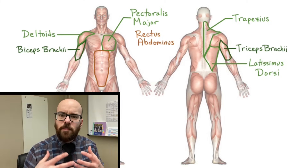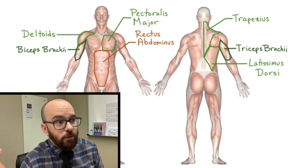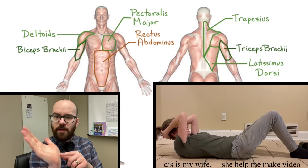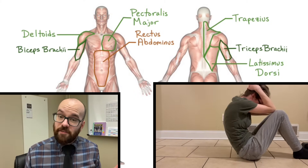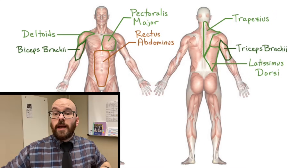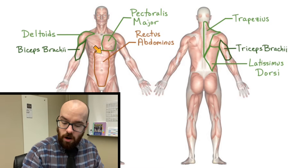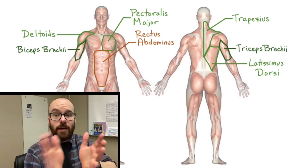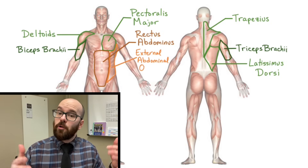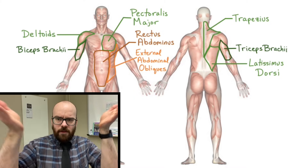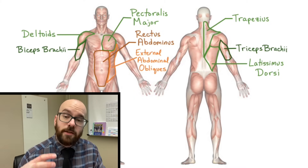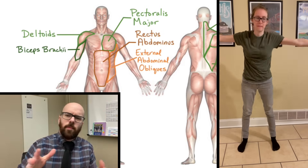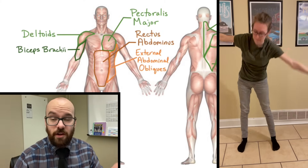Moving down to the abdominal muscles: the rectus abdominis — what you think of as the six-pack — bends the spine, like doing a sit-up. It connects from the anterior pelvis to the costal cartilage of the ribs, pulling those together to flex the spine. Lateral to the rectus abdominis are the external abdominal obliques, named because they run diagonally. They similarly flex the spine but can also contract one side at a time to bend the torso laterally to one side, with similar origins and insertions at the pelvis and ribs.